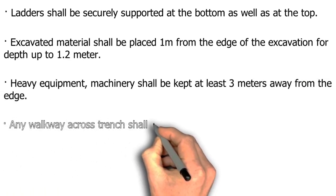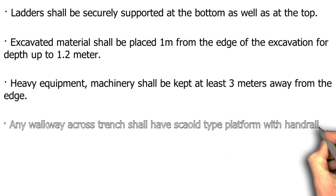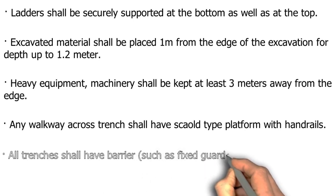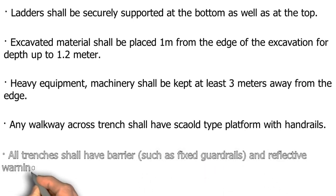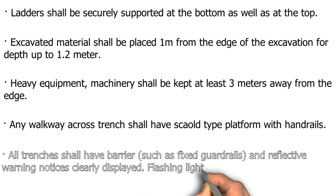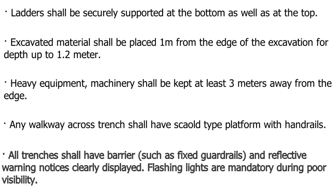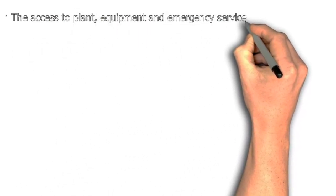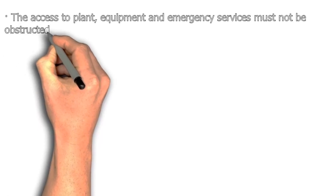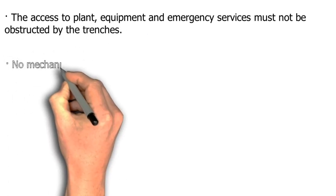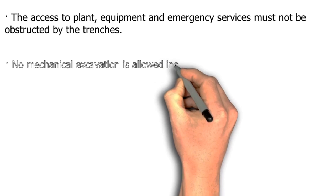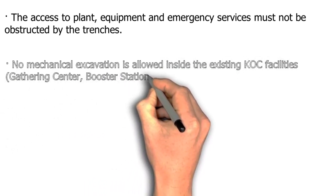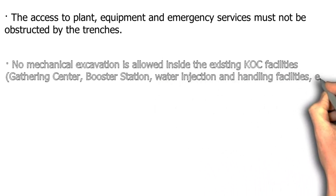Any walkway across a trench shall have a scaffold-type platform with handrails. All trenches shall have barriers such as fixed guardrails and reflective warning notices clearly displayed. Flashing lights are mandatory during poor visibility. The access to plant, equipment and emergency services must not be obstructed by the trenches. No mechanical excavation is allowed inside existing COC facilities, gathering centers, booster stations, water injection and handling facilities, etc.